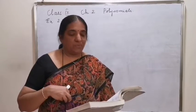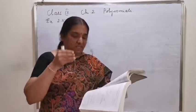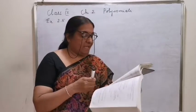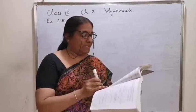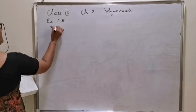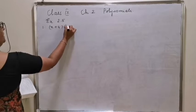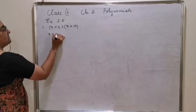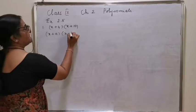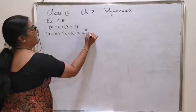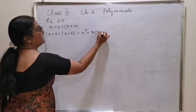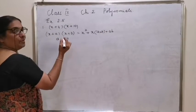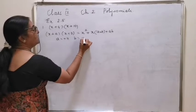Question number 1: Use suitable identities to find the following products. First one: x plus 4 into x plus 10. The identity is x plus a into x plus b is equal to x square plus x into a plus b plus ab. Here, a value is positive 4 and b value is plus 10.